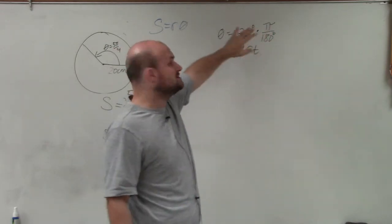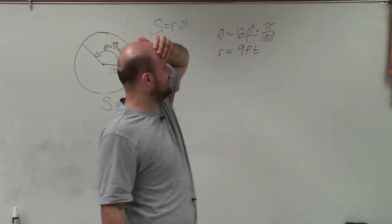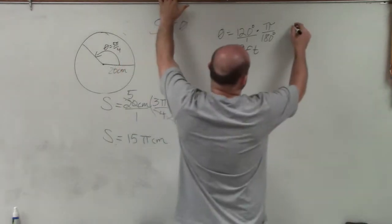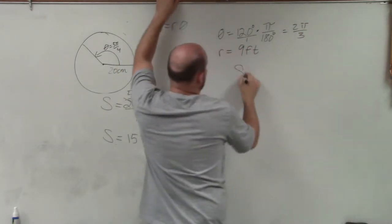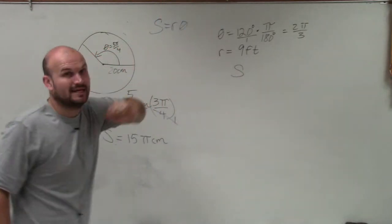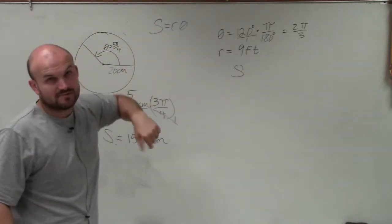And you can see that I can reduce them by dividing out of 60, which is going to be 2 thirds. So this is 2π over 3. Now I have my angle in radians as well as my radius.